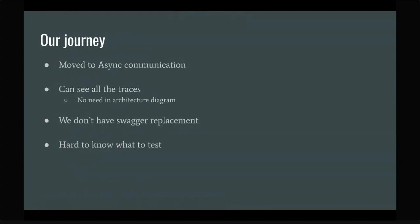Just to think about what we went through — we started with small microservices and HTTP communication. We moved to async communication so we wouldn't lose any data. That introduced challenges in understanding the bigger picture, which we solved by doing distributed traces. Distributed traces create a big architecture diagram for us as developers so we can see the bigger picture. We didn't find a specific Swagger replacement for async, but you'll probably find something in that area.